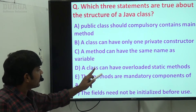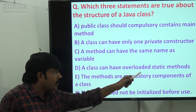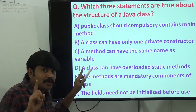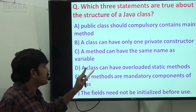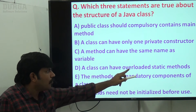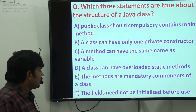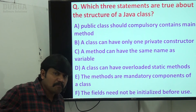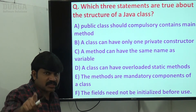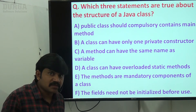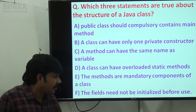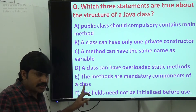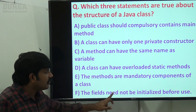Next: a class can have overloaded static methods — yes, the overloading concept is applicable to static methods, so this is correct. Next: methods are mandatory components of a class — that's wrong. Within a class, you are not compelled to write a method; a class can exist without methods.